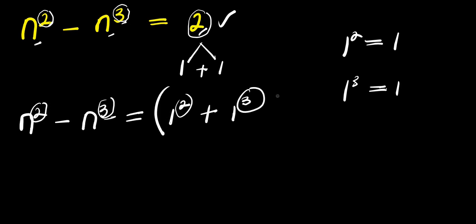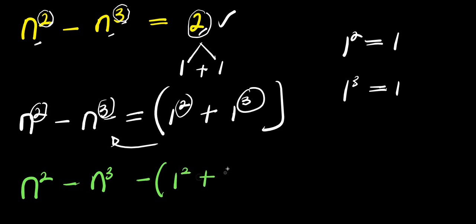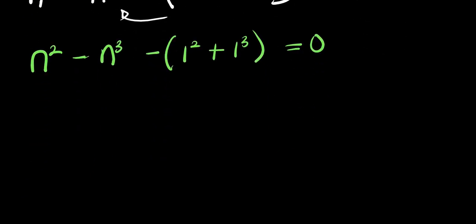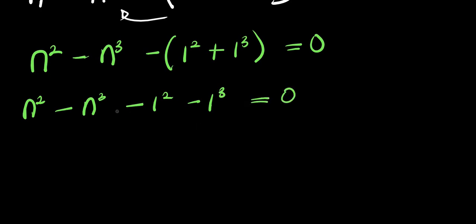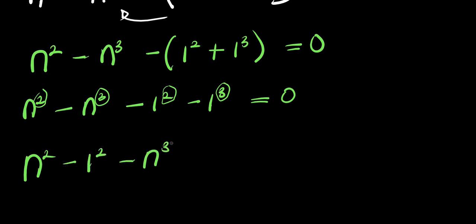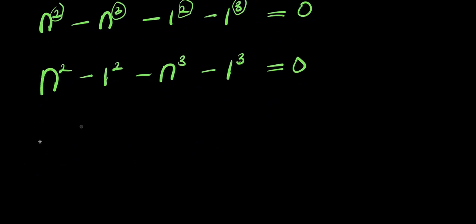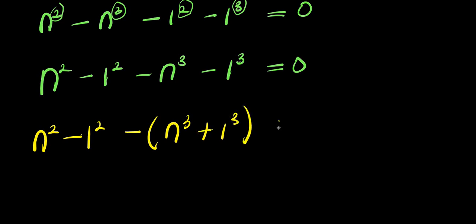The next step is to move everything over and equate to zero. We get n power 2 minus n power 3 minus 1 power 2 plus 1 power 3 equals 0. From here we can group terms: n power 2 minus 1 power 2, and then negative n power 3 minus 1 power 3, all equaling 0.